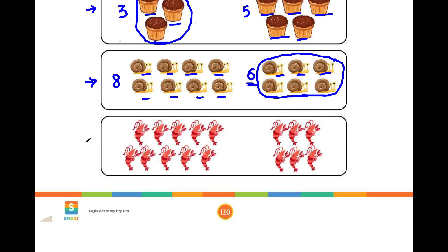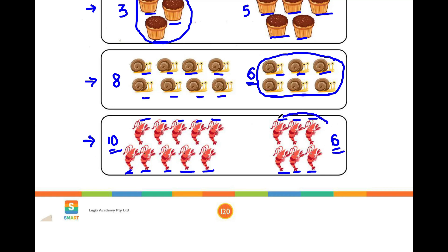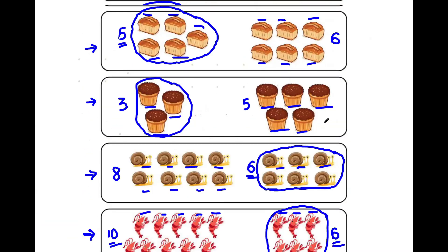Now let's move towards the last row and see what we have to do here. Here we got some shrimps on the left side and also on the right side. Let's start counting: shrimp number one, two, three, four, five, six, seven, eight, nine, ten — so this group contains ten shrimps. Now let's move towards the right side: shrimp number one, two, three, four, five, six — so this group contains six shrimps. We have to circle the group that contains less shrimps, and we know that six is smaller than ten, so let's start circling the group with six shrimps. I hope it makes sense to all of you. Thank you so much, kiddos.